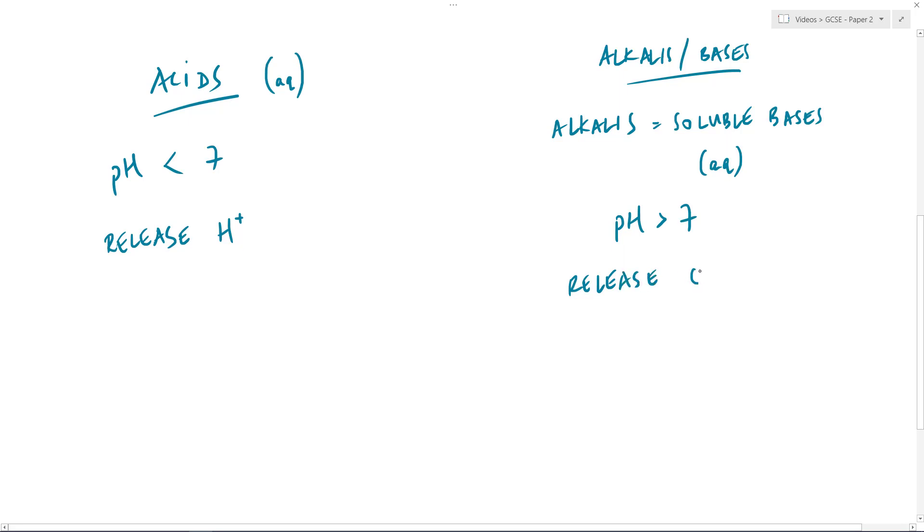Just like acids release H+, these release something else called OH-, and that is the hydroxide ion. So acids release H+ ions, hydrogen ions, whereas alkalis release OH- ions, hydroxide ions, in each case when they are dissolved in water.